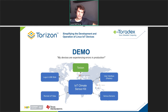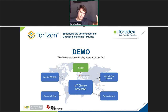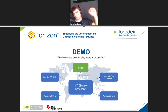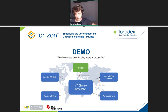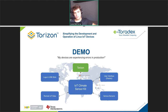We call this demo 'My devices are experiencing errors in production.' Our story: we have a simple IoT climate sensor kit — a small product deployed in various parts of the world, so it's a very distributed product. It contains various climate sensors measuring humidity, temperature, and pressure at various points globally, sending this data to a remote IoT infrastructure. It also offers a display, a simple user interface where local users or technicians can read the measurements, and it logs all sensor data to a USB stick so people can remove it and analyze the data locally.